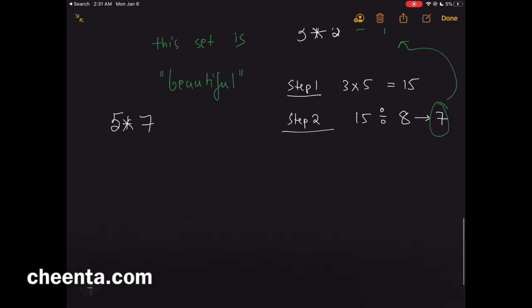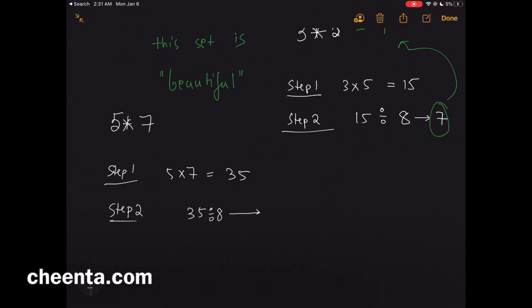Step one: multiply 5 and 7 to get 35. Step two: divide 35 by 8 and find the remainder. The remainder is 3. So combining 5 and 7 gives you 3.